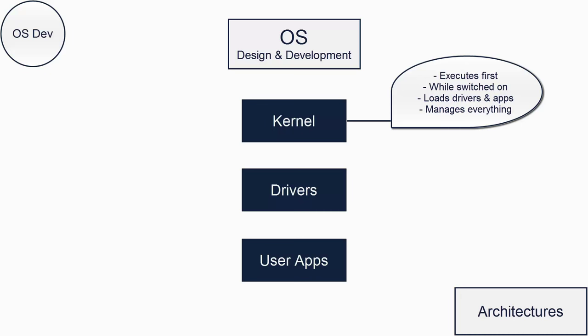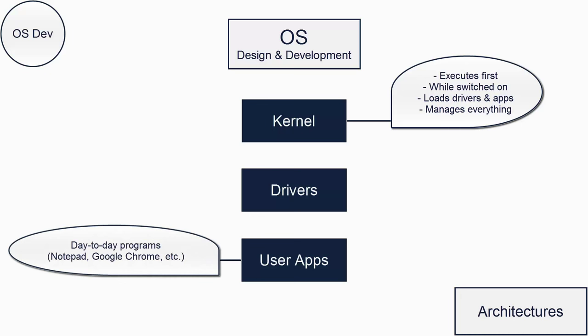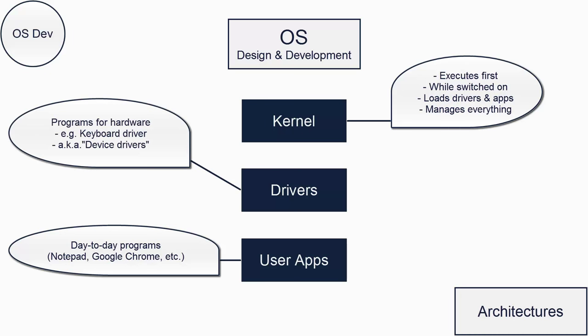The kernel loads two types of programs: drivers and user applications. User applications are simple — they're just the day-to-day programs you or I would use. Drivers are programs designed to control and manage particular pieces of hardware. For instance, keyboard drivers are programs for reading the data from a keyboard and converting that into characters which other programs can understand. For this reason, drivers are often called device drivers, because they control one or more devices.